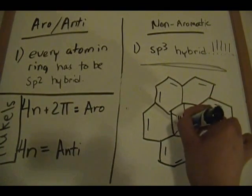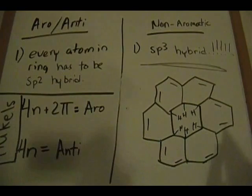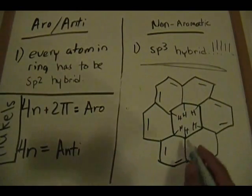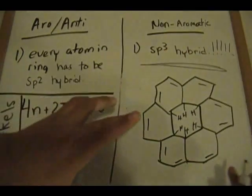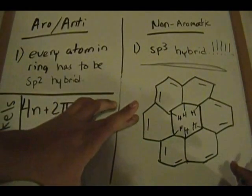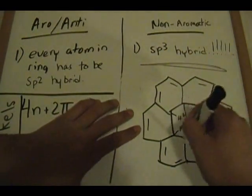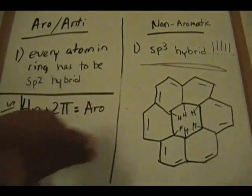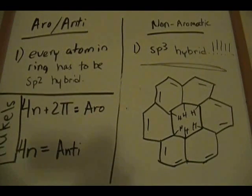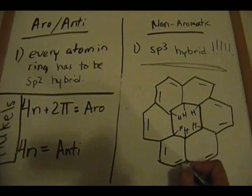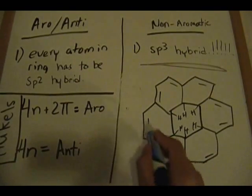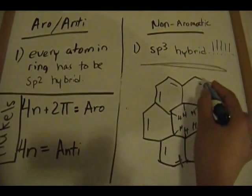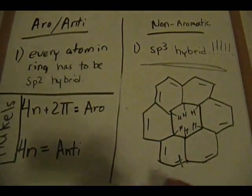H there, H there. Some of you guys are automatically going to say 'oh, non-aromatic' because there are sp3 hybridized atoms there. However, the overall molecule is considered aromatic, and we'll think of that piece as just being a substituent. So let's count — starting here, making a little mark: 2, 4, 6, 8, 10, 12, 14, 16, 18.